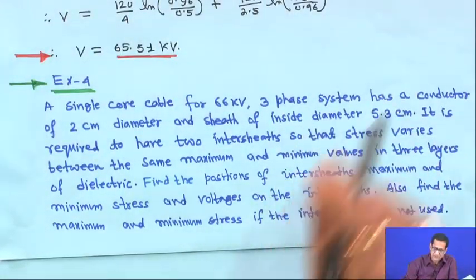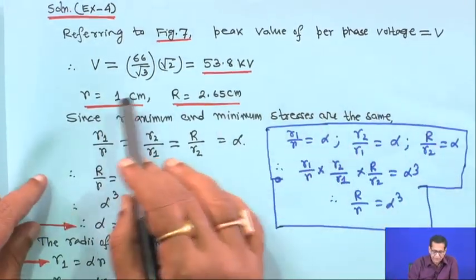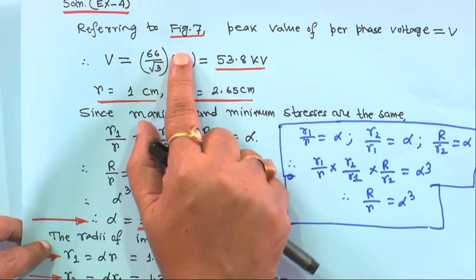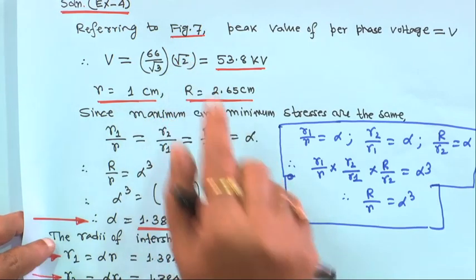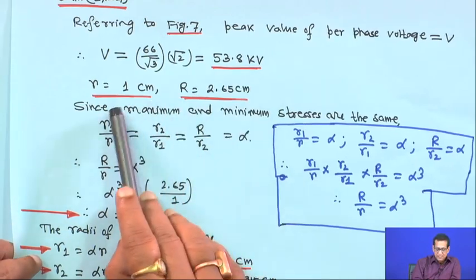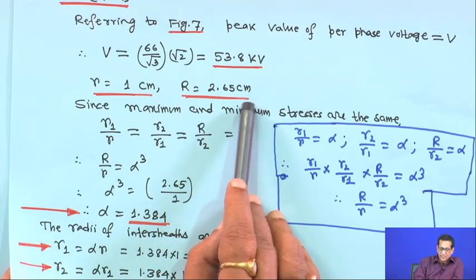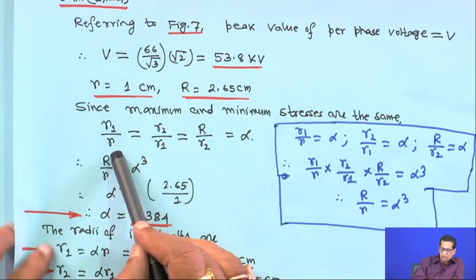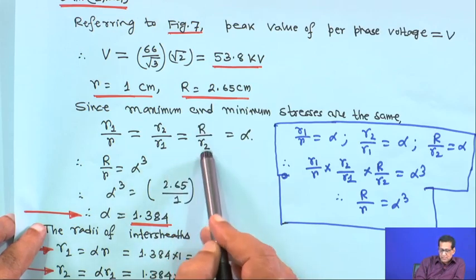The peak value of per-phase voltage is 66/√3 × √2 = 53.8 kV. Small r = 1 cm, capital R = 2.65 cm. Since maximum and minimum stresses are the same in all layers, the condition holds: R1/r = R2/R1 = R/R2 = alpha. Therefore, capital R/small r = alpha cubed, giving alpha³ = 2.65/1, so alpha = 1.384.